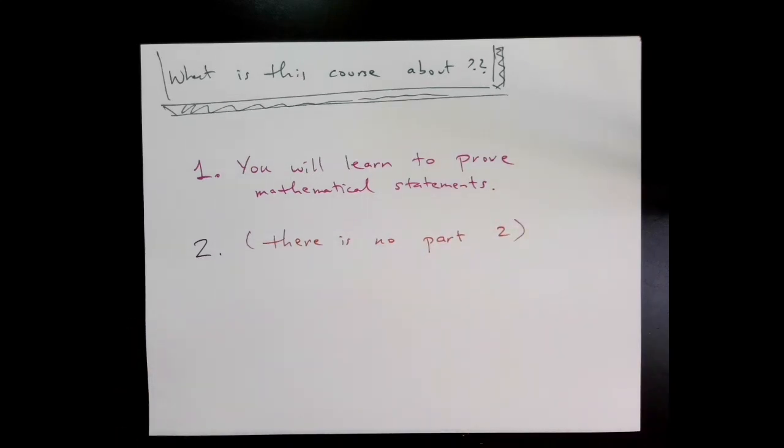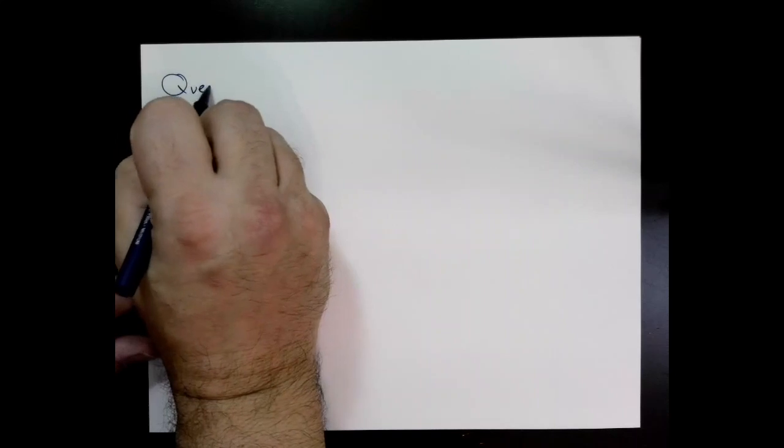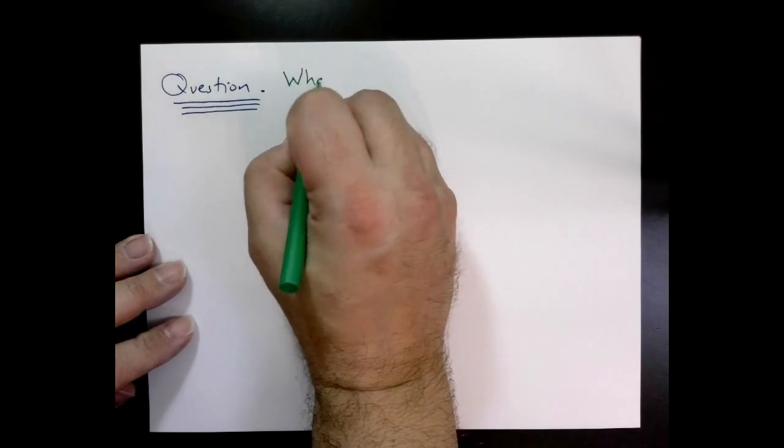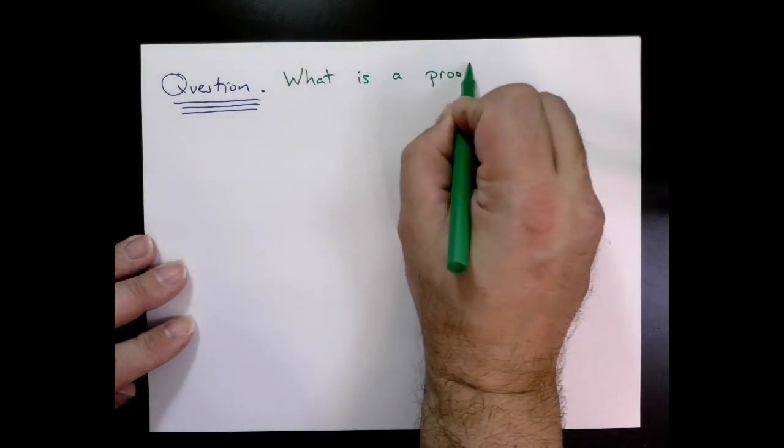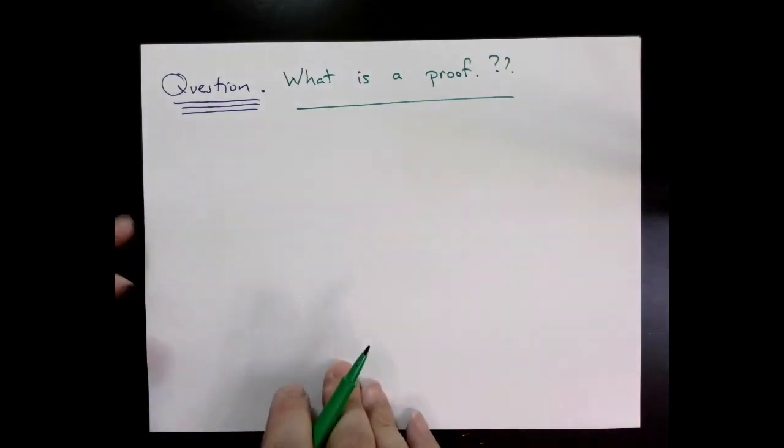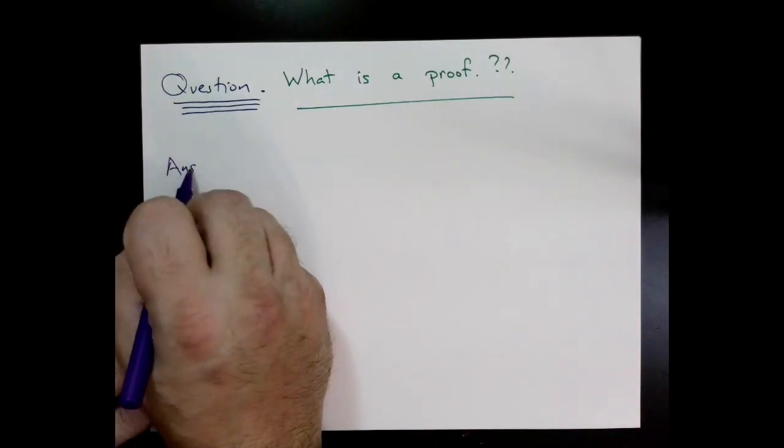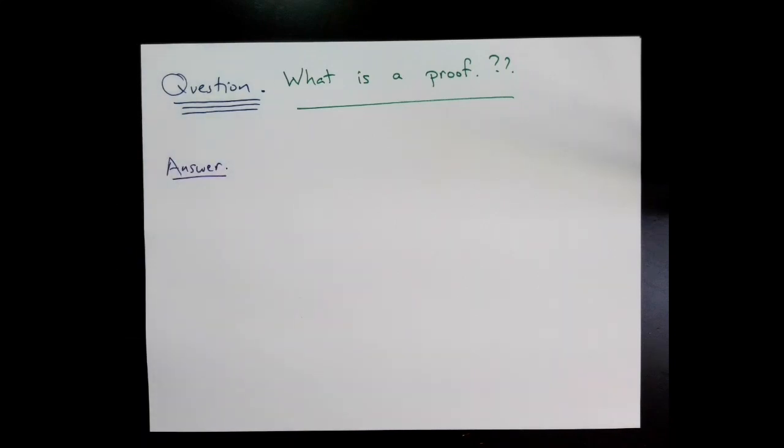So of course, what is a proof? One definition of a proof that we're going to use in this class is a mathematical proof is an argument considered acceptable by mathematicians to convince someone else a certain mathematical statement is true.